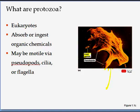Cilia are hair-like structures present on the surface of a cell — paramecium is a good example of that. A flagella would be a hair-like structure present in organisms such as euglena.